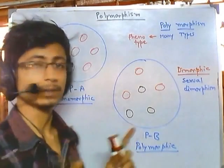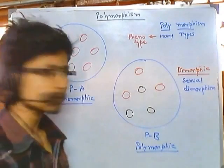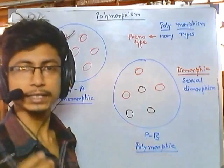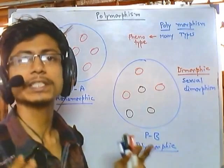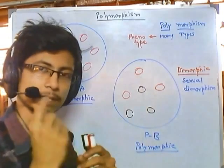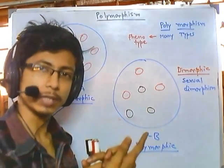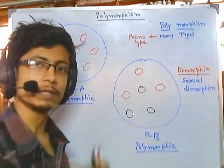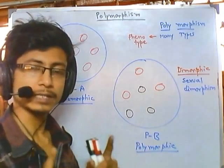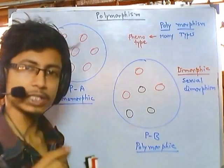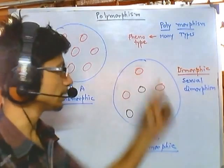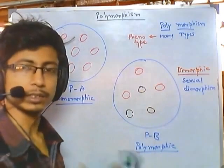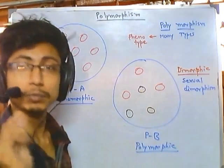Now another very important point about polymorphism is why it arises and how it arises. Polymorphism usually arises due to genotypic change, because what we see in phenotype is definitely due to some change in genotype. Any change in genotype will reflect on the phenotype. So if we have a mutation in the genotype, it will change the morphology of the population — it will become polymorphic from monomorphic due to mutation.